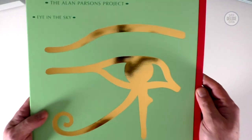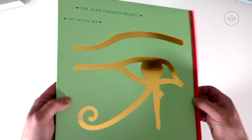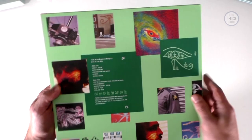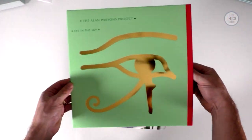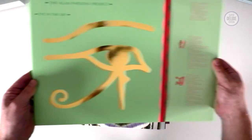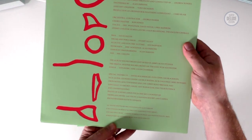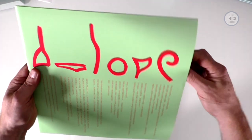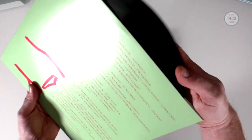1982's Eye in the Sky. Bit of luxury on this one. You've got some foil blocking here on the front. Again this isn't a gatefold either. So we're into the 80s. Gatefolds, I wouldn't say they weren't popular, but probably less prevalent than they were in the 70s. Printed inner, lyrics, credits.